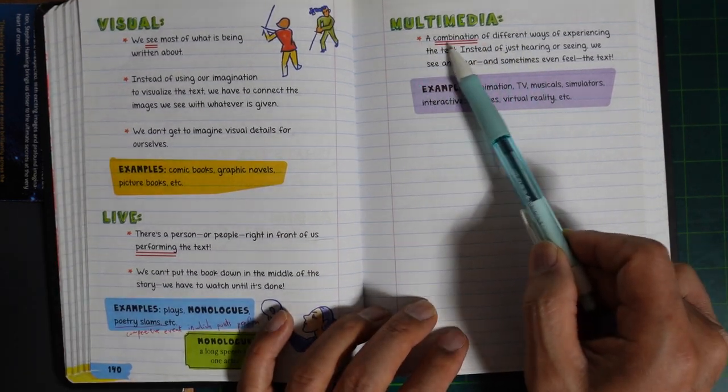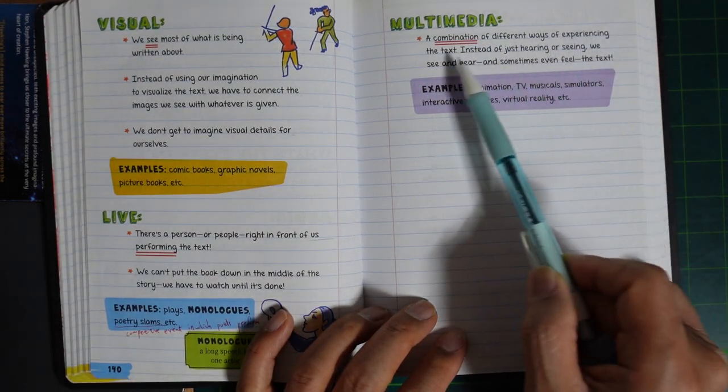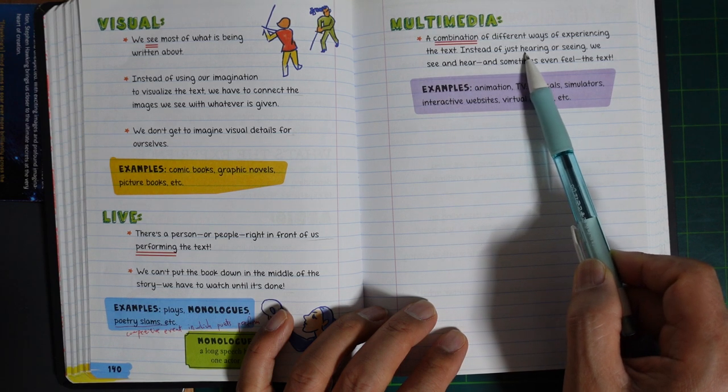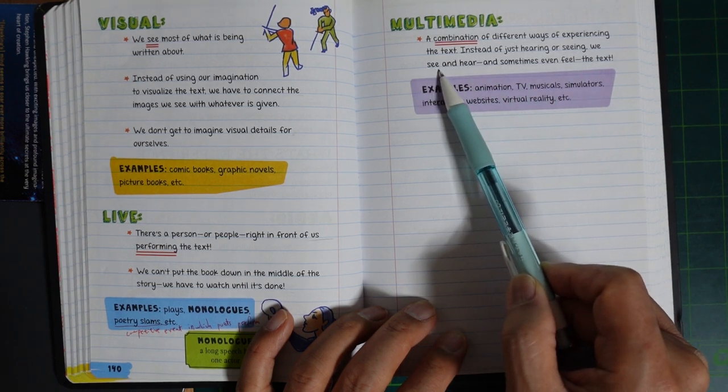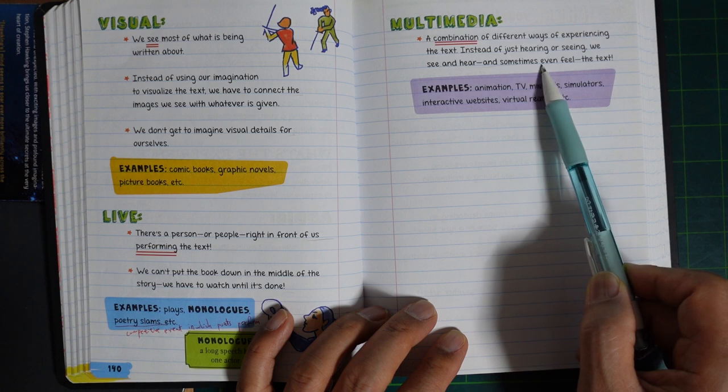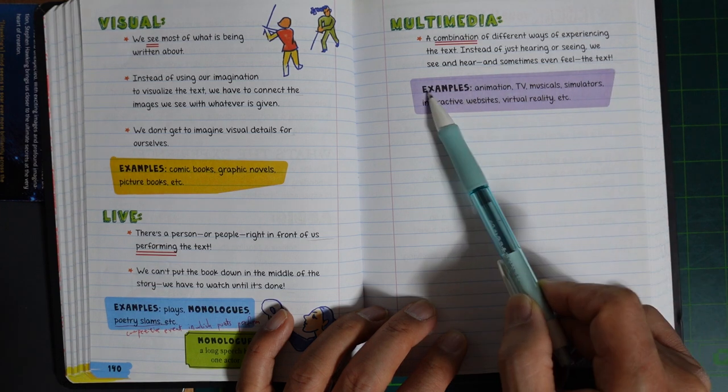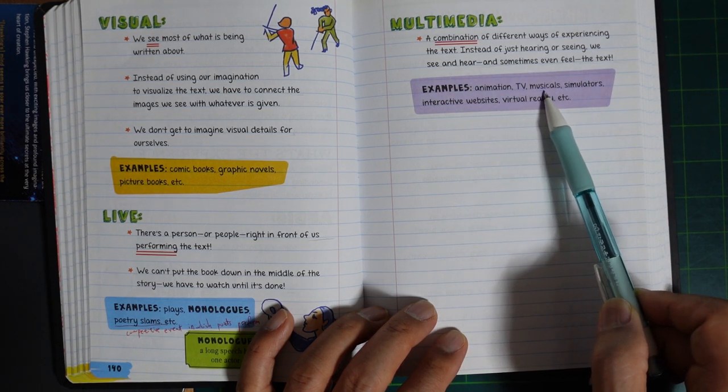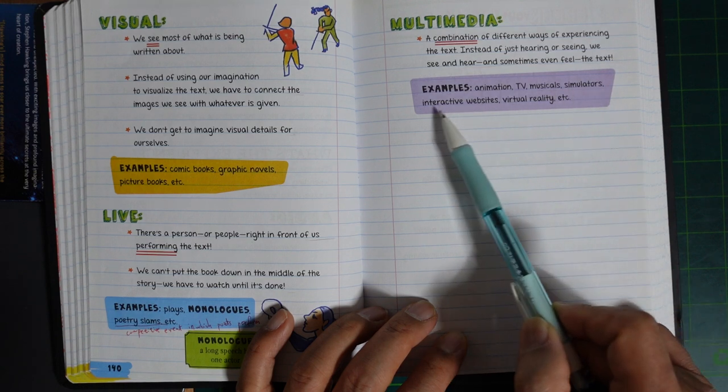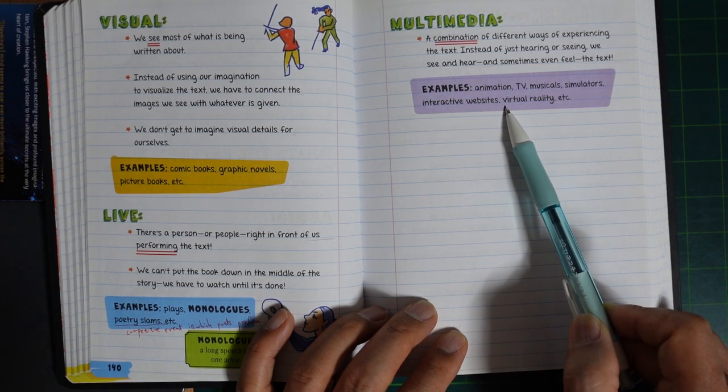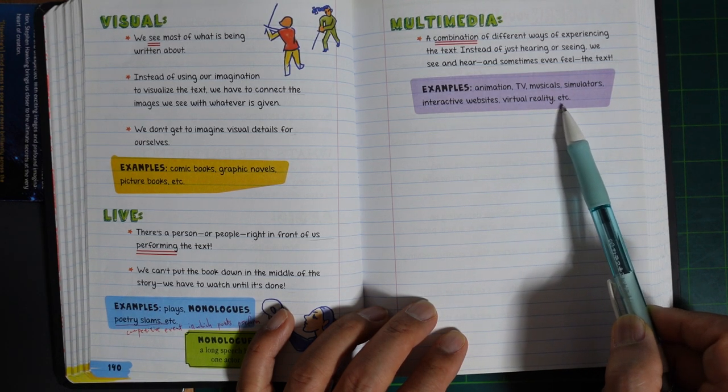Multimedia: A combination of different ways of experiencing the text. Instead of just hearing one thing, we see and hear and sometimes even feel the text. Examples: Animation, TV, musicals, simulators, interactive websites, virtual reality, etc.